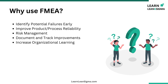Fourth, document and track improvements: the FMEA process creates a documented record of identified risks, actions taken, and improvements made, which can be valuable for future reference and audits. And fifth, increase organizational learning: by involving cross-functional teams in the FMEA process, organizations can foster a culture of continuous improvement and shared learning.